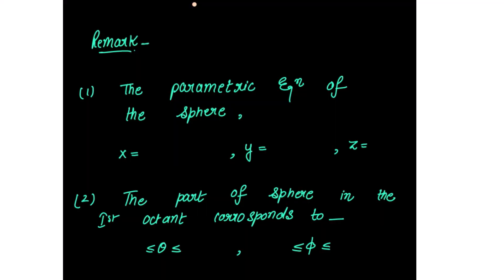There is a remark that the parametric equation of the sphere is x = sin(θ)cos(φ), y = sin(θ)sin(φ), and z = cos(θ). The part of the sphere in the first octant corresponds to theta lying between 0 to π/2 and phi also lying between 0 to π/2. These are the limits for these two variables.